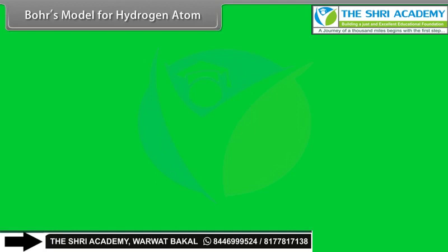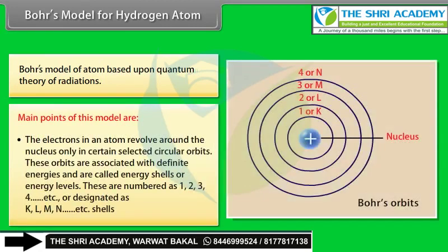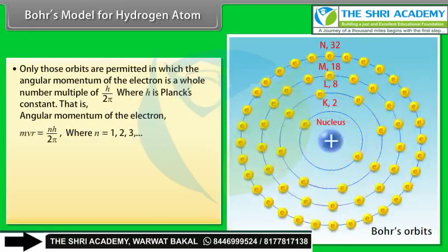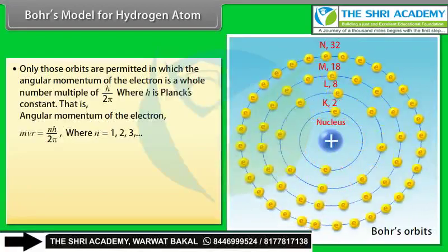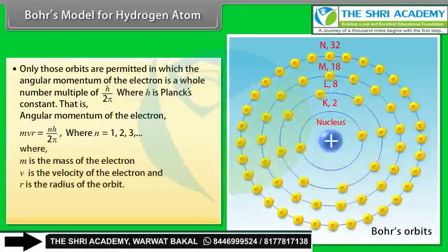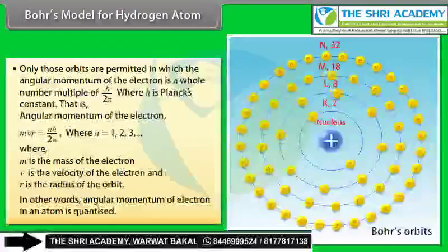Bohr's model for the hydrogen atom is based on quantum theory. Main points: Electrons revolve around the nucleus only in certain selected circular orbits with definite energies, called energy shells or energy levels, numbered 1, 2, 3, 4 or designated K, L, M, N. Only those orbits are permitted in which the angular momentum of the electron is a whole-number multiple of h/2π: mvr = nh/2π, where n = 1, 2, 3… Angular momentum of the electron in an atom is therefore quantized.